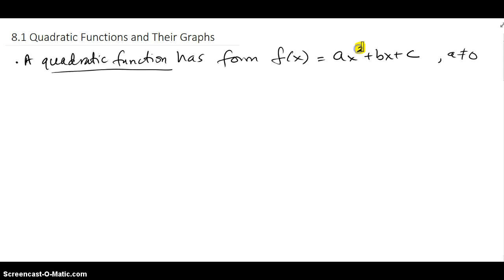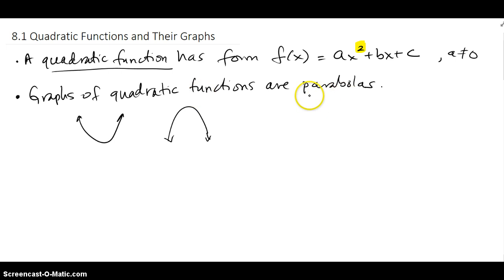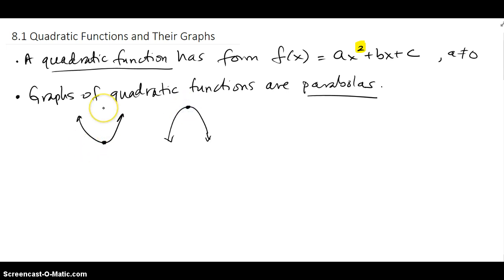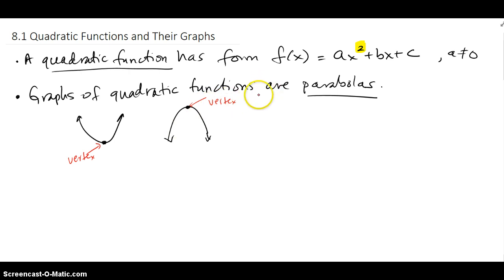Quadratic basically means you're going to see an x² involved in that function. Graphs of quadratic functions are parabolas. So whenever you graph anything that has this form it's going to open into a curve either up or down — it's either going to have a low point or a high point. The name of these is the vertex. A parabola opening up has its vertex at the lowest point, giving a minimum, and a parabola opening down has its vertex at the highest point, giving a maximum.